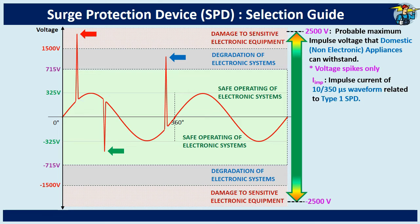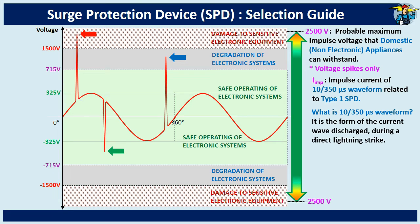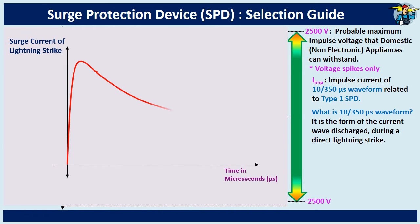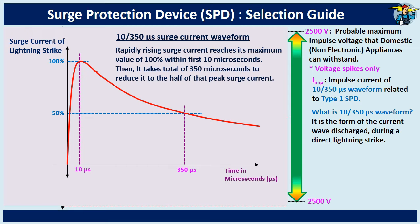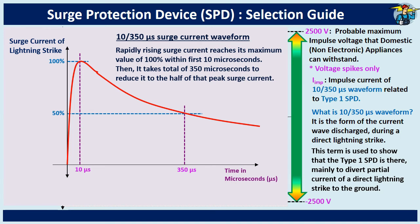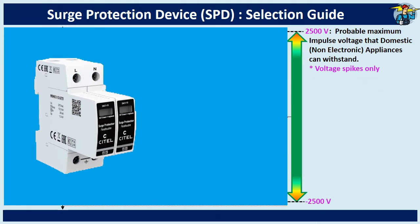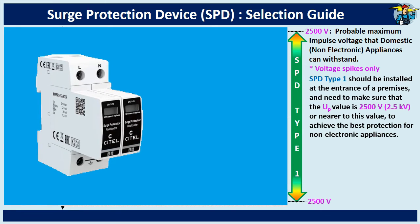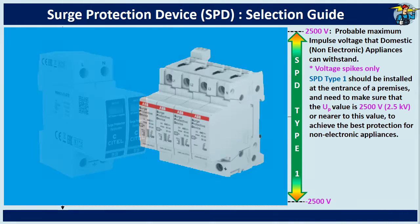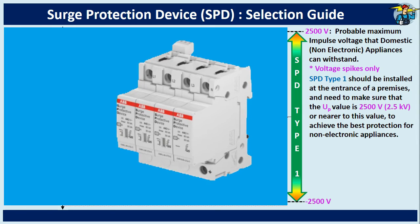Iimp marked on a type 1 SPD is the impulse current of a 10/350 microsecond waveform. It is the shape of the discharged current wave during a direct lightning strike. Rapidly rising surge current reaches its maximum value of 100% within the first 10 microseconds. Then it takes a total of 350 microseconds — a fairly long tail — to lower it to half of that peak surge current. This term is used to show that the type 1 SPD is there mainly to divert partial current of a direct lightning strike to the ground. SPD type 1 should be installed at the entrance of a premises, and its UP value should be 2500 volts or closer to this value, to achieve the best protection for non-electronic appliances.